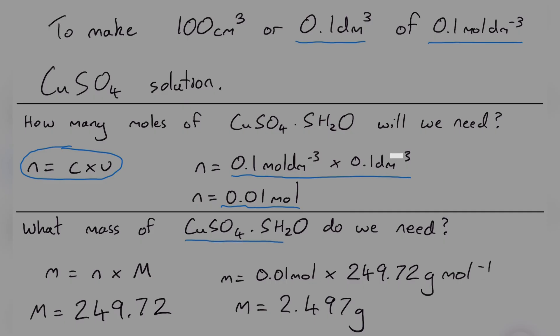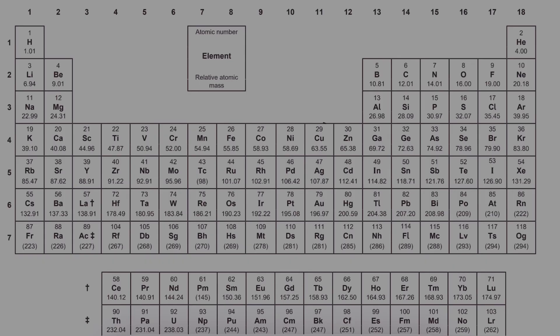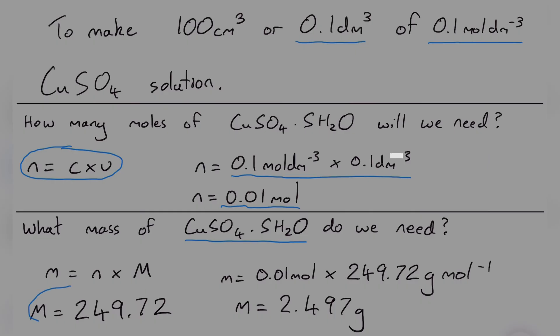We'll be using copper(II) sulfate pentahydrate, so we need to find the mass of 0.01 moles of this substance. The molar mass is the sum of the relative atomic masses of the atoms in the compound, which can be found in the periodic table. The molar mass is 249.72 grams per mole.